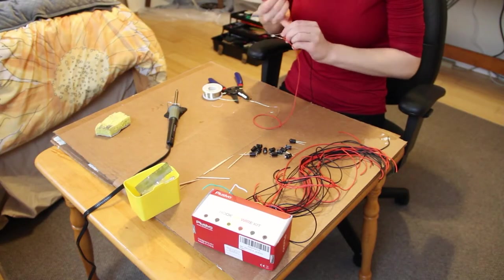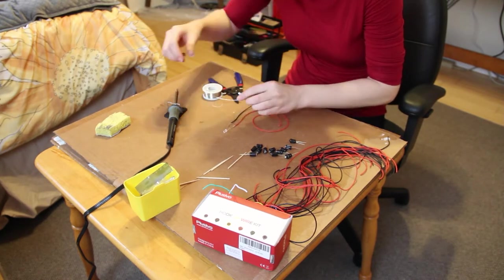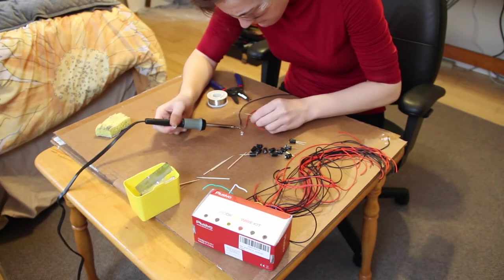I got ground and power wire for each of the LEDs, stripped the ends and twisted them around the legs of the LEDs, and then I soldered them on.